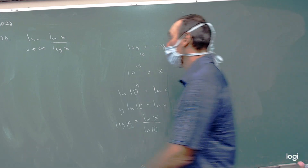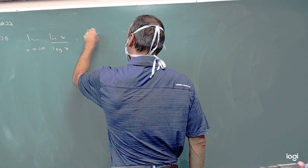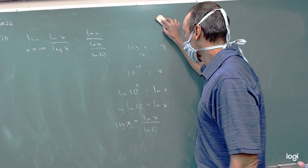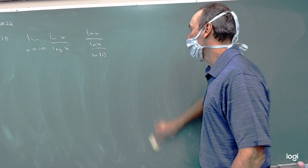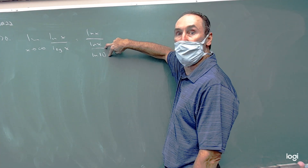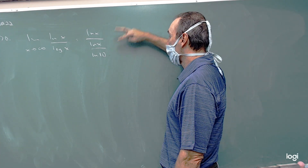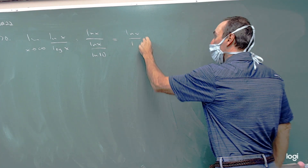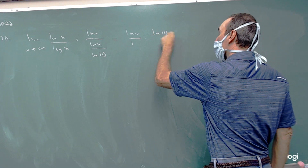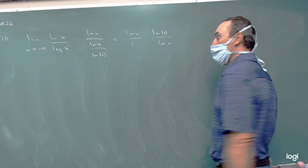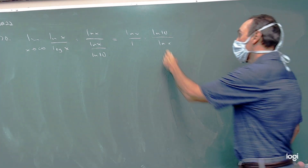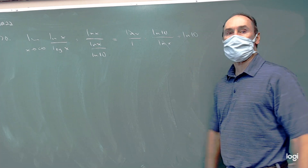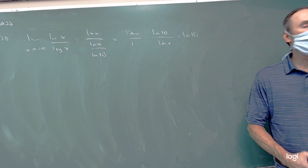So then we can come back and say that's natural log x over natural log 10. And to divide by natural log x over natural log 10 is to multiply by the reciprocal. So we have our original natural log x, and now we have natural log 10 over natural log x. We can cancel the natural log x's, and so it's going to be the natural log of 10 — that's our limit on that one.